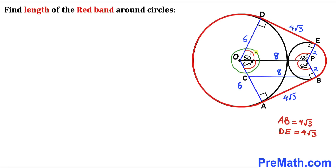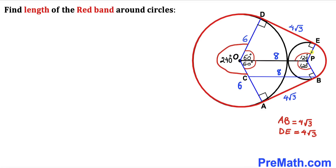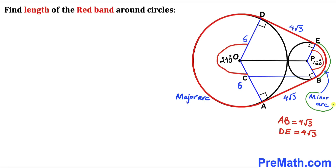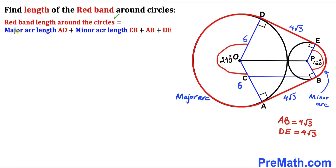The whole angle at center O is 360 degrees. We know the two angles of 60 degrees each, so the remaining angle — which is the arc AD angle — is 360 minus 120, giving 240 degrees. For the smaller circle, the whole angle is 360 degrees and the two angles of 120 degrees each account for 240 degrees, so the arc BE angle is 360 minus 240, which equals 120 degrees. Arc AD is our major arc with 240 degrees, and arc BE is our minor arc with 120 degrees.